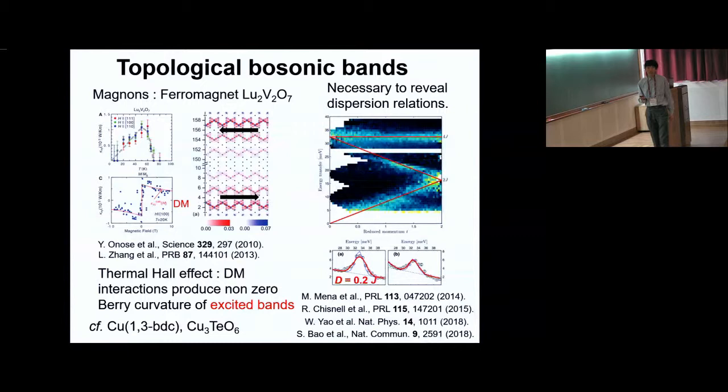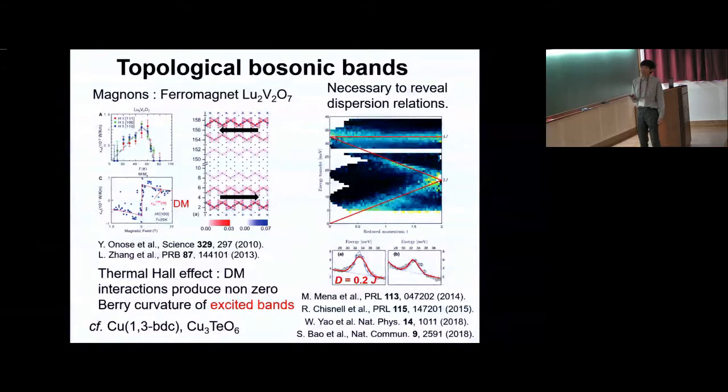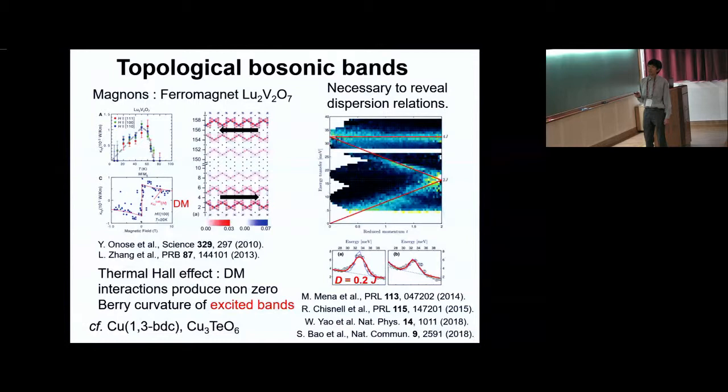Later theoretical work indicated that these DM interactions produce non-zero Berry curvature and associated edge states, which are the key to the thermal Hall effect. Note that these edge states are induced from the excited bands. However, observing these edge states is usually difficult, so it is necessary to resolve the detailed dispersion relations to discuss the associated topology.